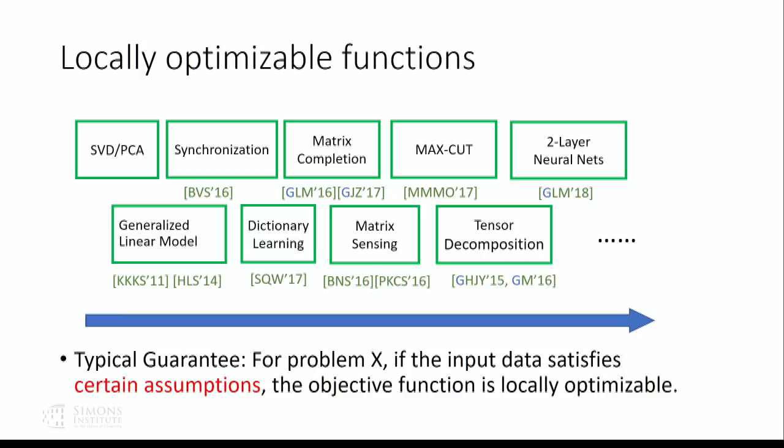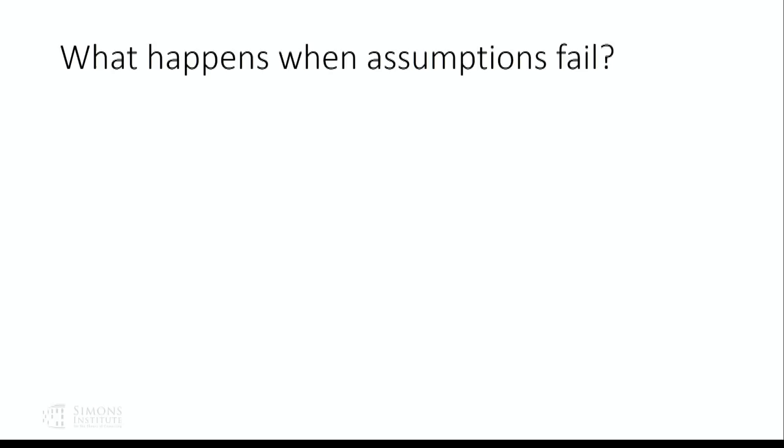I'm worried about what happens if these assumptions are not satisfied — what if there are even small perturbations to these assumptions? The worry is that when the assumptions fail, non-convex optimization algorithms will not fail gracefully as some convex optimization algorithms do. Here's a very simple comparison: this is the classical least squares problem — a convex problem. Think of a_i as vectors and b_i as numbers, and we are hoping to find parameter x which is the least squares solution over the set of input data a_i, b_i.